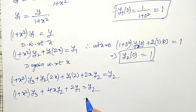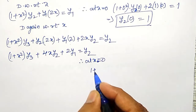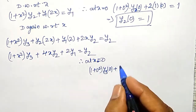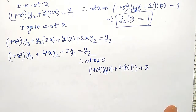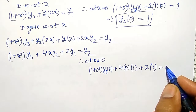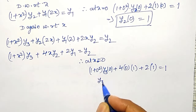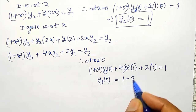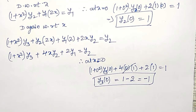Substituting x = 0: (1 + 0)·y3(0) + 4·0·y2(0) + 2·y1(0) = y2(0). So y3(0) + 2·1 = 1, giving y3(0) = 1 − 2 = −1. So y3 at 0 is minus 1.